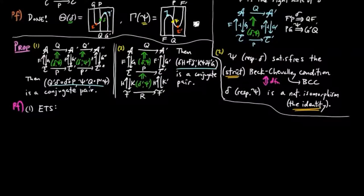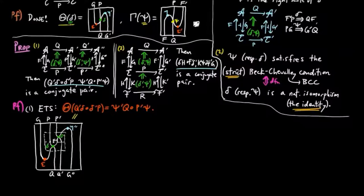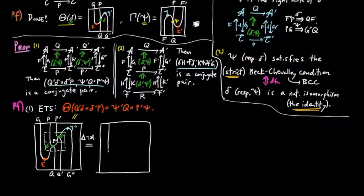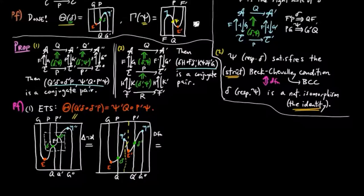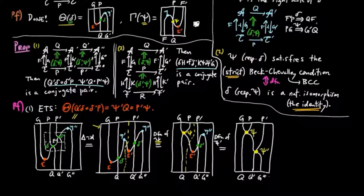To prove one, it is enough to show theta, as defined above, takes the natural transformation q-prime delta, delta-prime p to psi-prime q, p-prime psi. So we give the string diagram for theta of q-prime delta delta-prime p, where the inner square is q-prime delta delta-prime p. Then by the triangle identity for f-prime g-prime, we can add a string equal to f-prime in the center. Then we notice that the substring on the left side is equal to theta delta, which is by definition psi, and also that the right-hand side is theta delta-prime, which is equal to psi-prime by definition. Therefore, we obtain psi-prime q, p-prime psi.